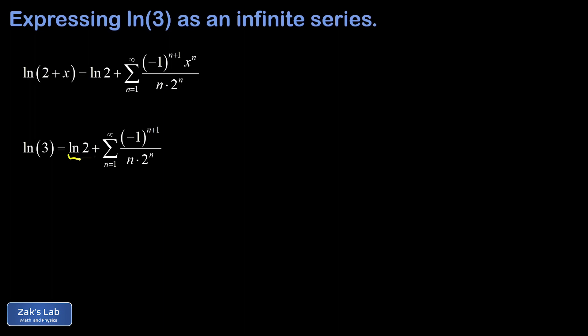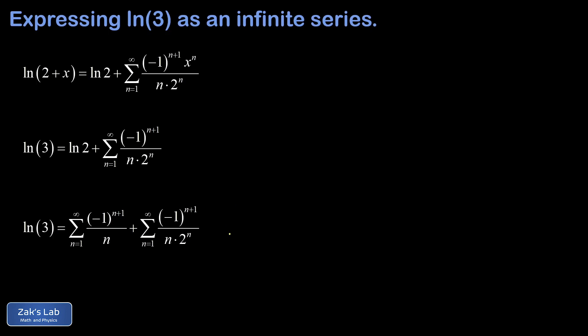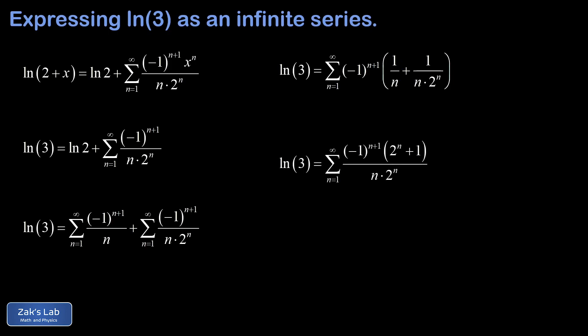To fix this, we replace natural log 2 with its own infinite series — the alternating harmonic series. Now we have two sums from n equals 1 to infinity that we can combine by adding terms together. Factoring out negative 1 to the n plus 1, we get a single alternating series with the factor 1 over n plus 1 over n times 2 to the n. Getting a common denominator by multiplying the first term by 2 to the n, we arrive at the final form: natural log 3 equals the sum of negative 1 to the n plus 1 times the quantity 2 to the n plus 1, over n times 2 to the n.